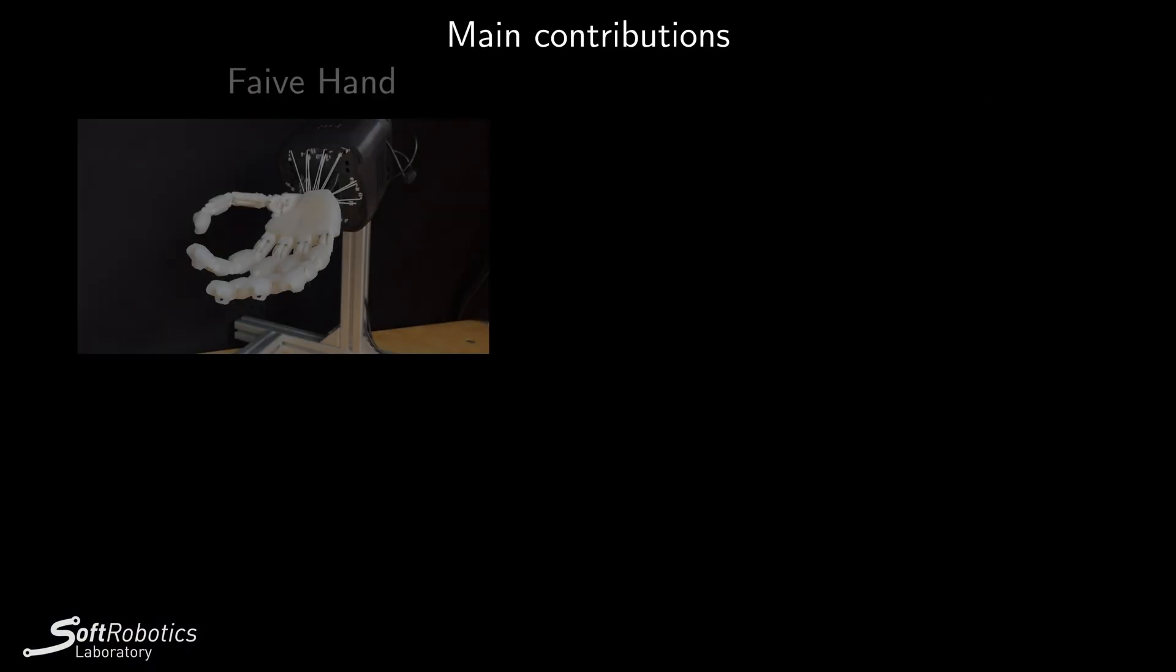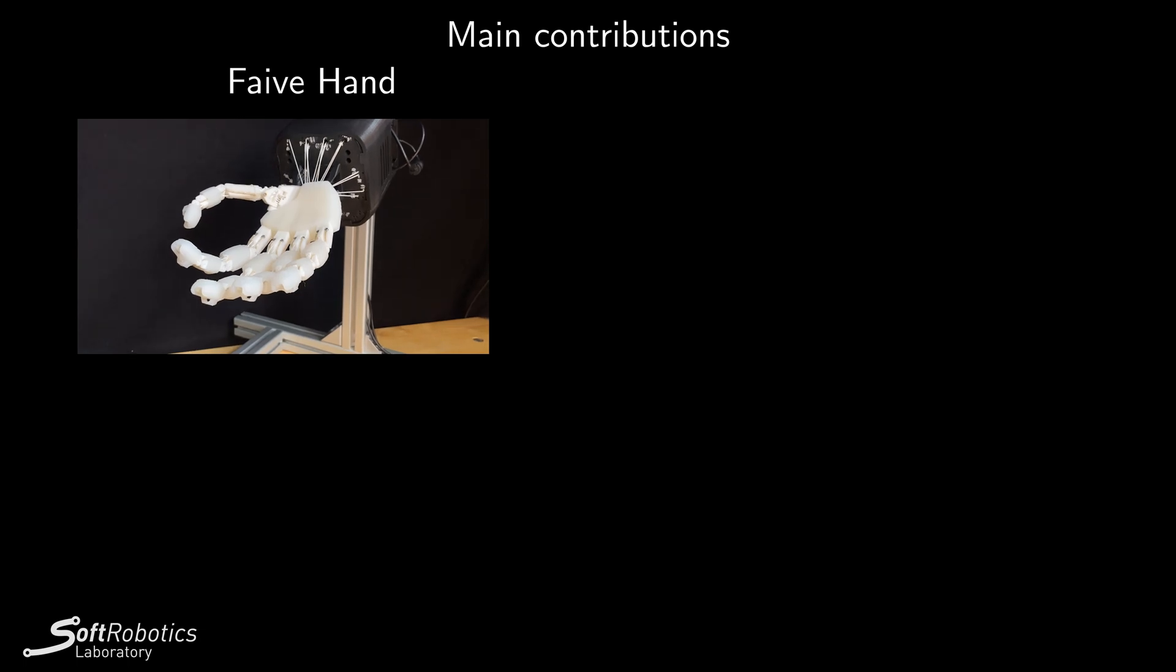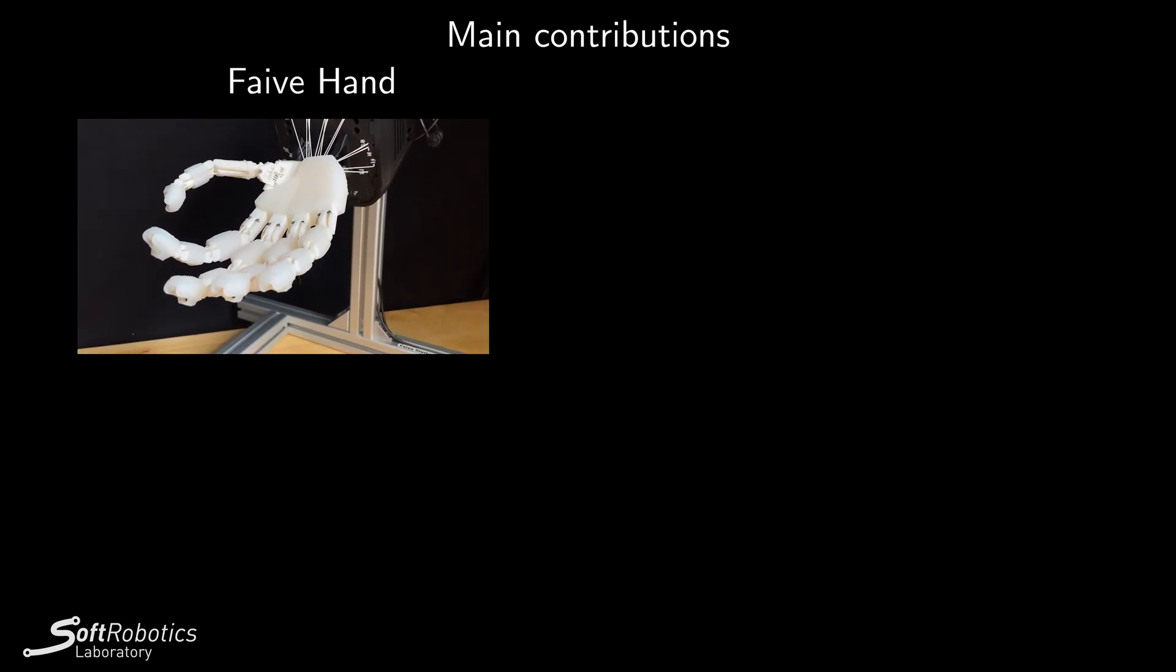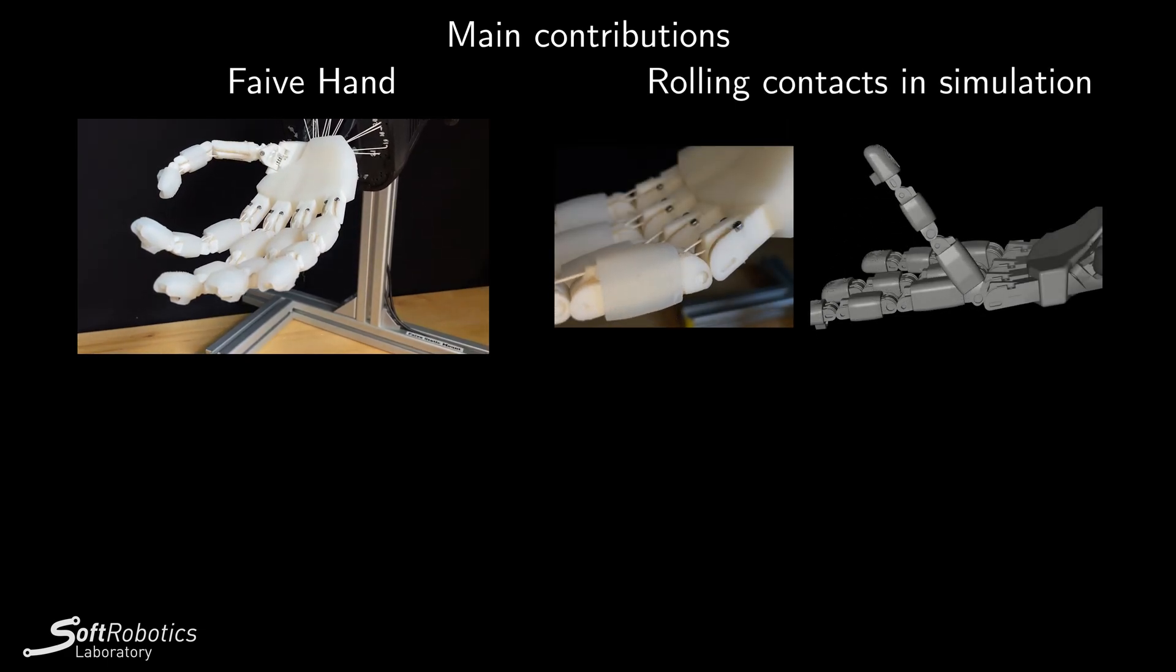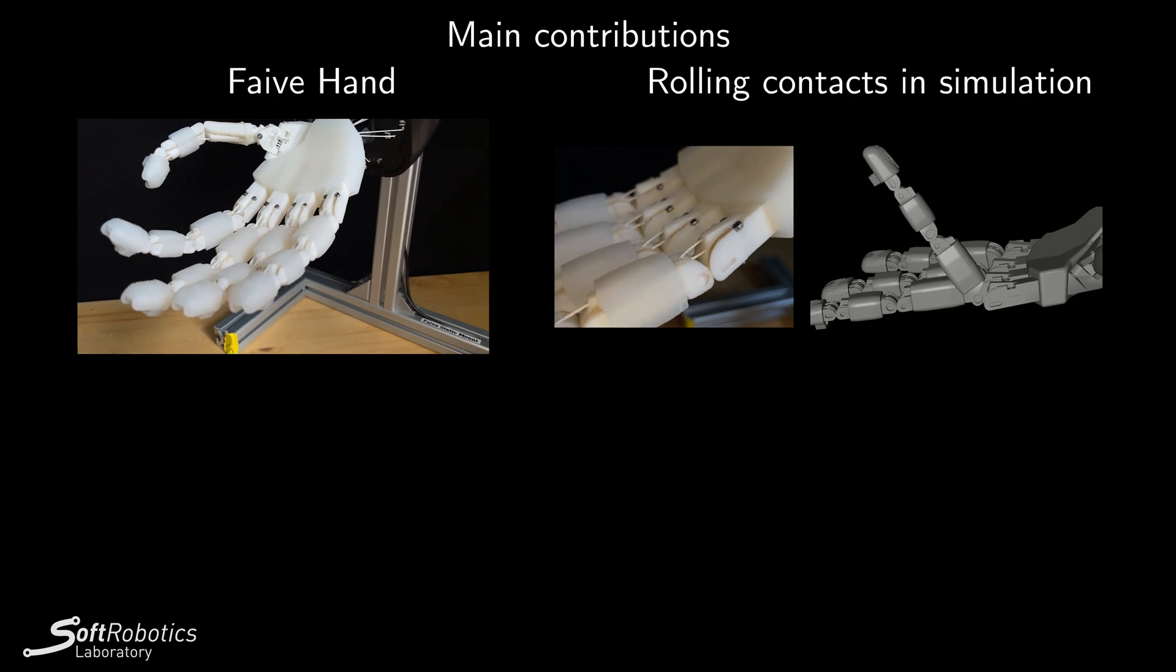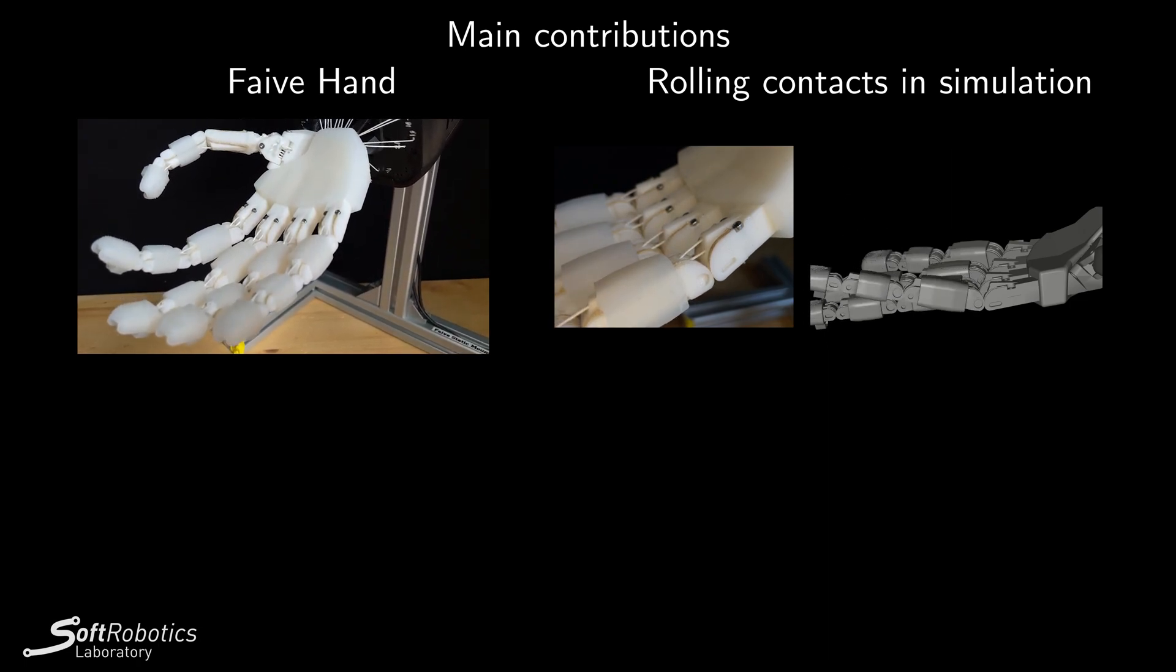Here are the main contributions of this work. We present the Faive Hand, which is an anthropomorphic robotic hand developed at the Soft Robotics Lab. We show a method to integrate rolling contact joints of the Faive Hand into the Mujoco and Isaac Gym simulators to enable reinforcement learning.